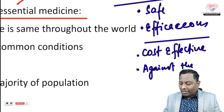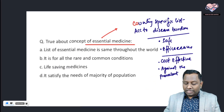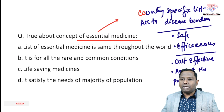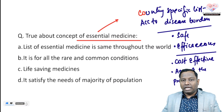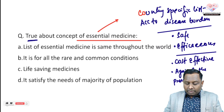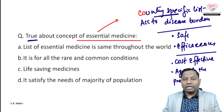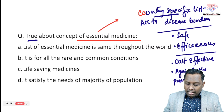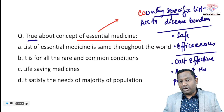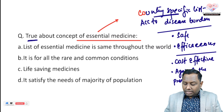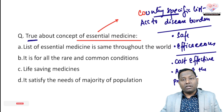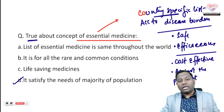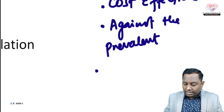Essential medicines should be against the most prevalent diseases of that country. They are not always life-saving medicines — they can save life if untreated conditions worsen, but they are not essentially always life-saving. The options to evaluate: the list is NOT the same throughout the world; it is country-specific. It is not for all rare and common conditions — orphan drugs are not essential medicines.